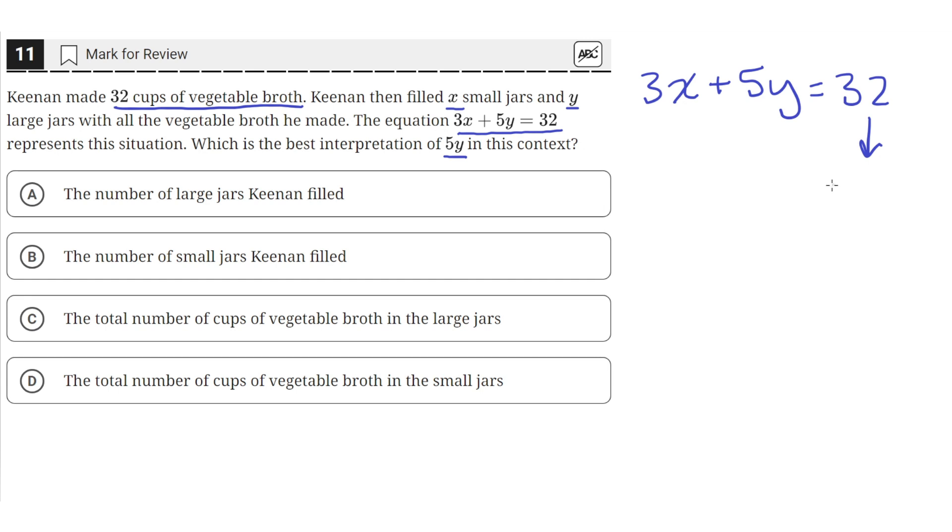32 here is the total number of cups of vegetable broth. And since this equation equals 32, this side of the equation must also equal 32.